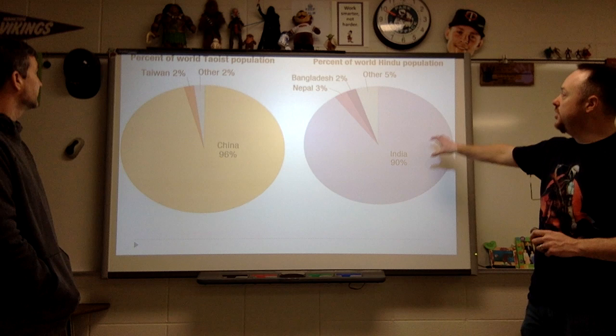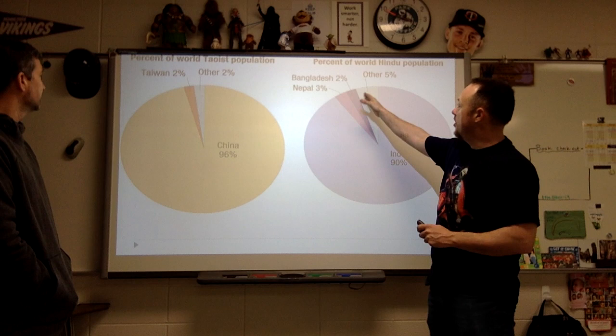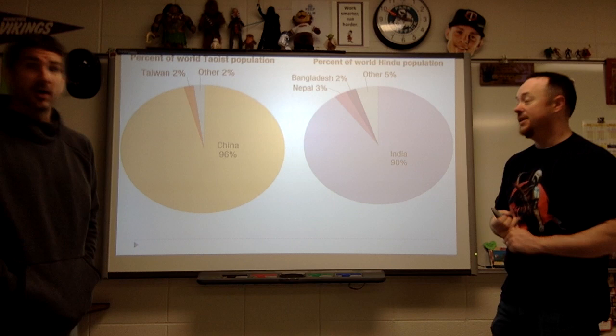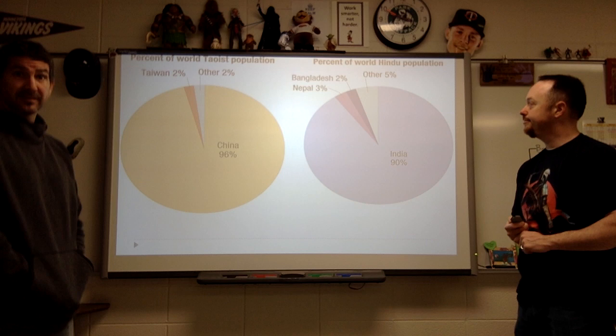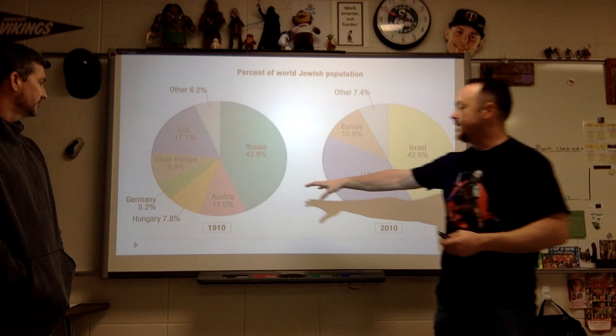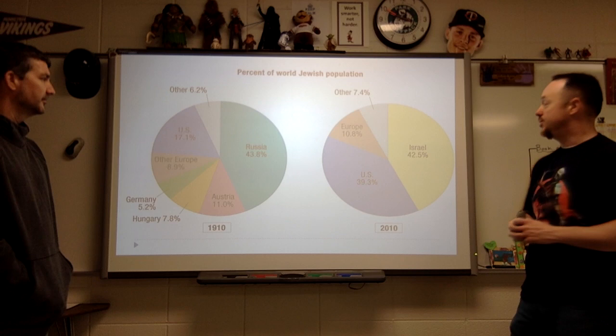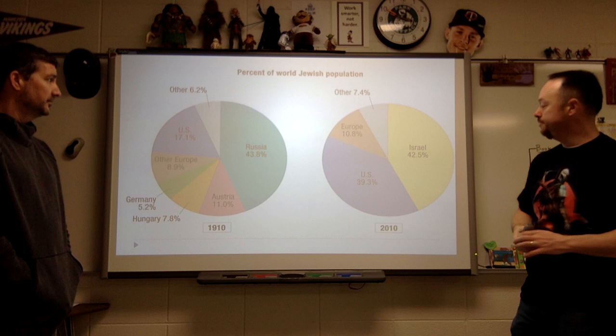Looking at the percent Hindu population of the world: 90% right here in India, with some other percentages in South Asia. The Taoist population is 96% in China — note that Taiwan is China as well, if you ask the Chinese government, so really 98%. The Jewish population is a little more widespread. You can see in 1910, much more widespread. Obviously things happen after that — the Holocaust eventually occurs, and there's a major change. Then Israel is created, which changes the distribution of the Jewish population.